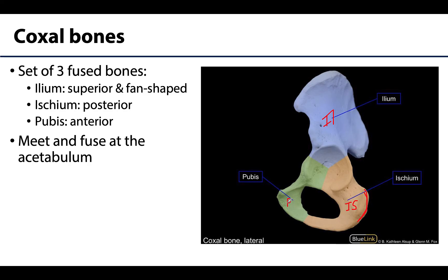These three bones will typically be completely fused by early adulthood and after puberty. During childhood there will be cartilage in this particular region, and you can sometimes see where it had been before it was completely replaced with bone in a fully formed adult bone.